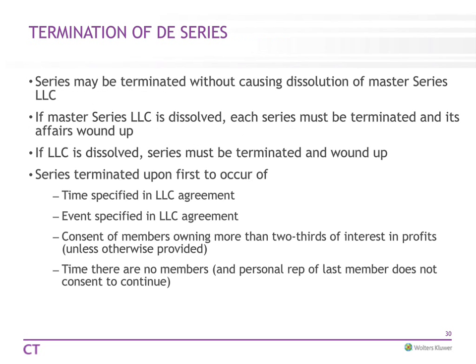A Series LLC may find it's not doing the business you thought it would, or all property has been sold, so you want to terminate. If the master series is dissolved, each series still has to be terminated to wind up. If the LLC is dissolved, the series must also be terminated and wound up. It could occur at a specified time, due to a specified event, consent of two-thirds of the members, or when there are no members living and the personal representative of the last member doesn't consent to continue.